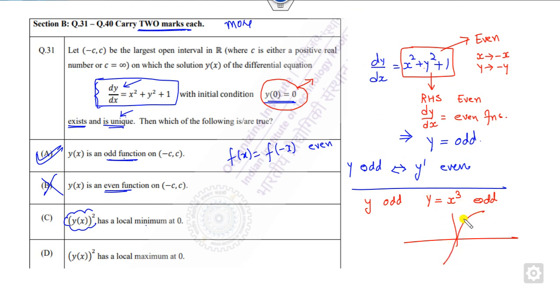Once it is an odd function, it is symmetric about the origin and you need y squared. When you take y squared, this red line will become here. So this point at zero becomes my minimum. It can never be the maximum. It means y squared has the minimum point. So this option also cancels out. The options are A and C.